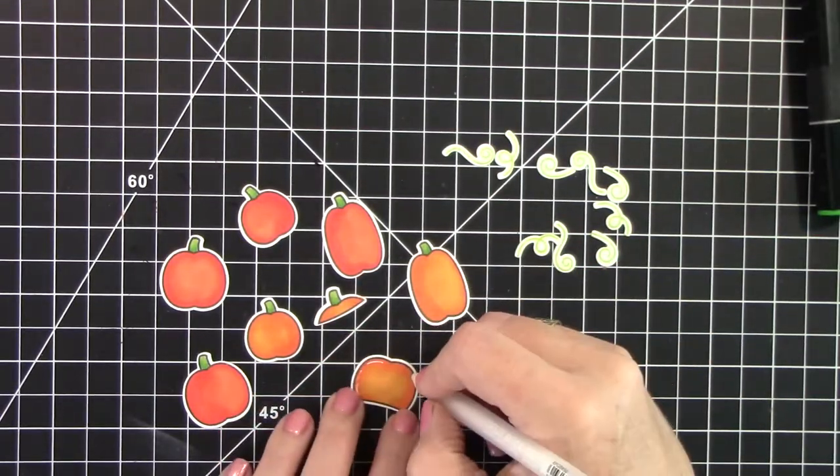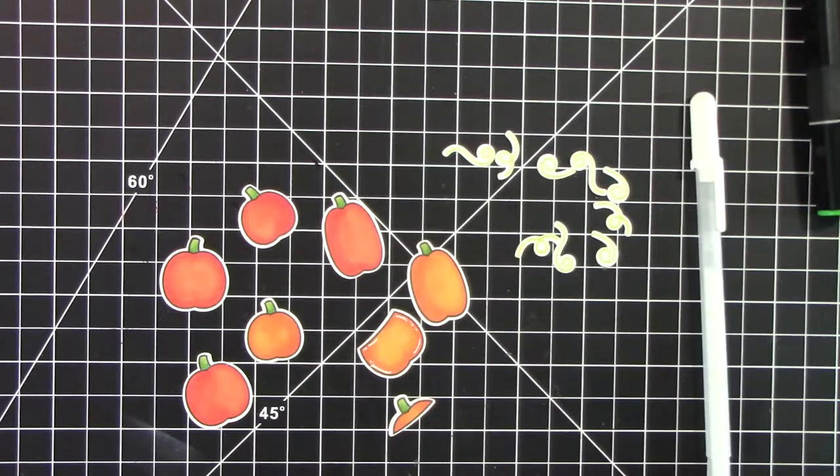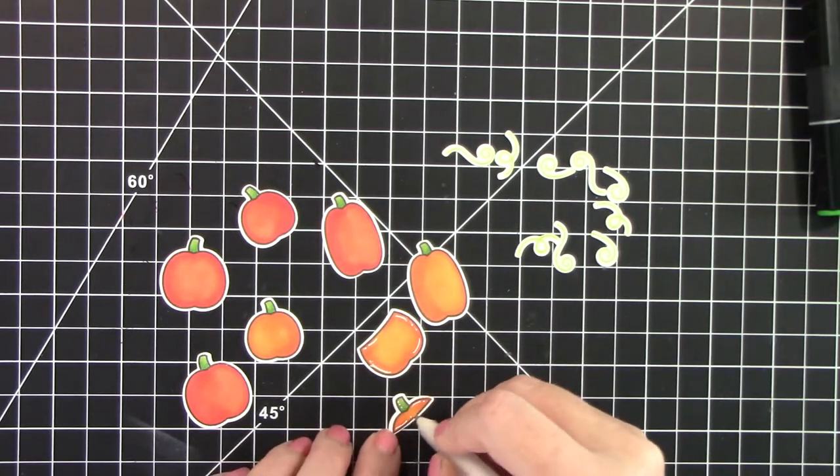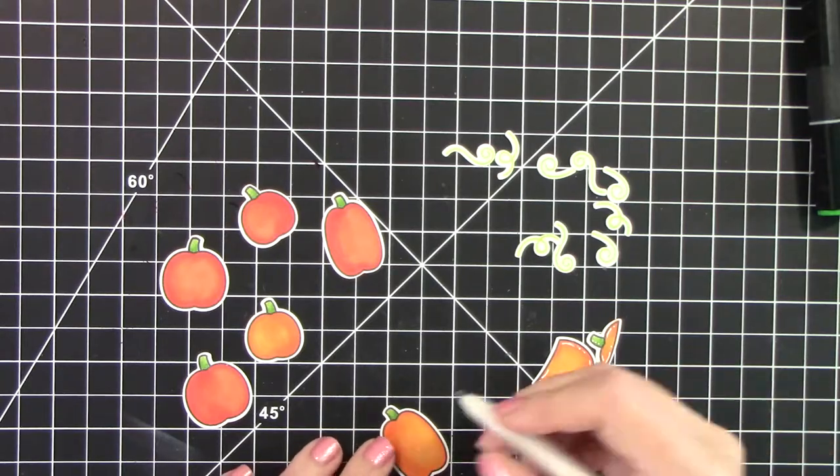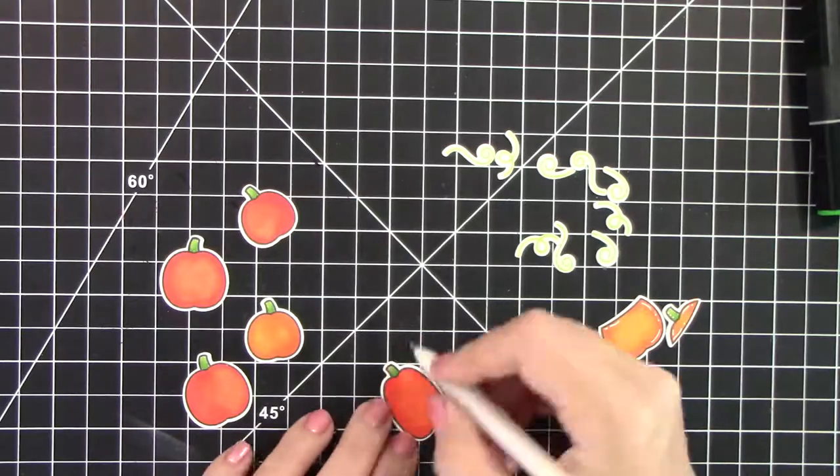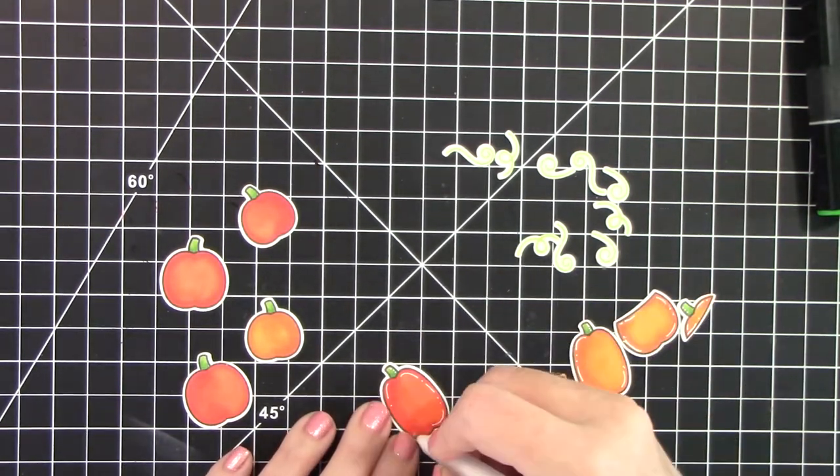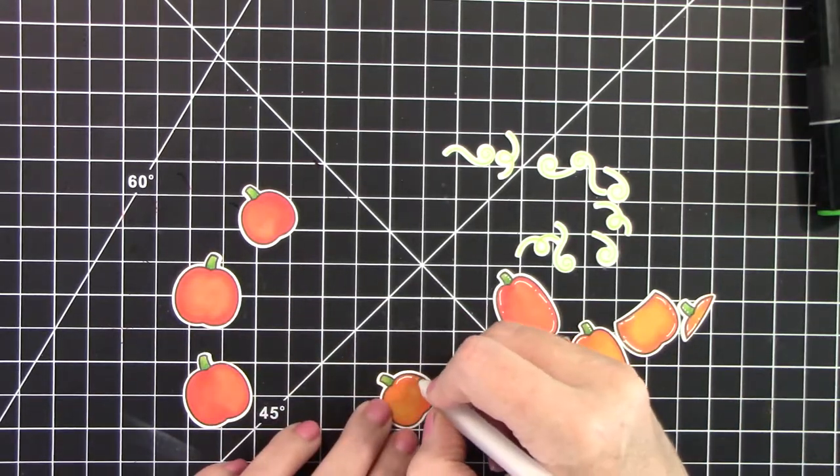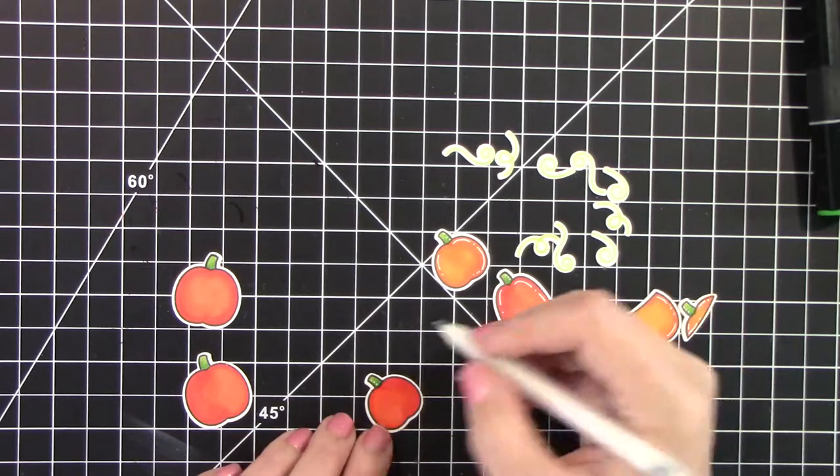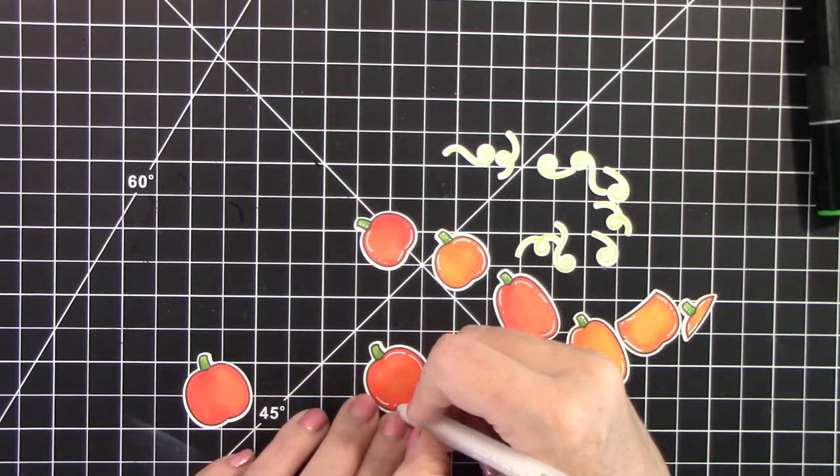Now I'm taking my white Jelly Roll pen and adding highlights. And I added a lot of highlights to these. Because I knew I really wasn't going to be adding a ton more embellishments. And so I just kind of went heavy-handed with the white Jelly Roll pen. Just some little dots on the stems. Super cute. Just finishing that up.